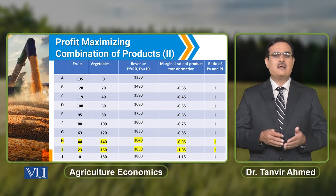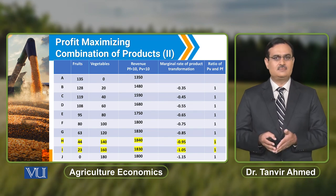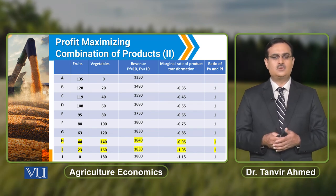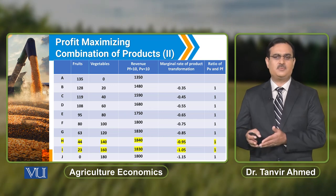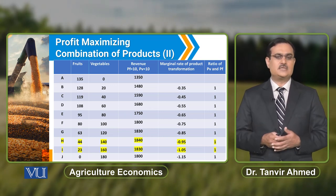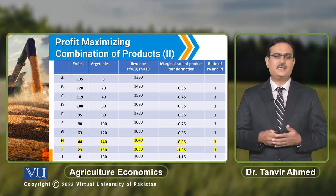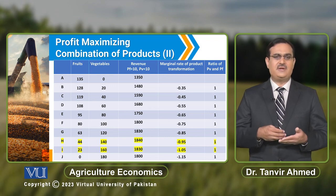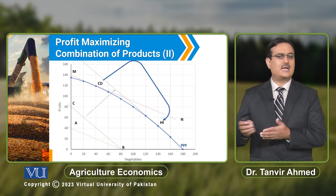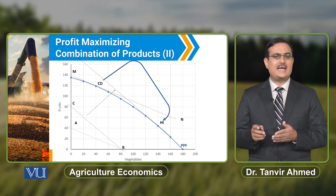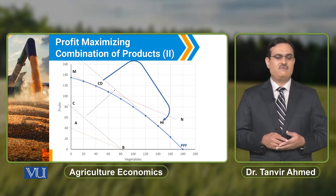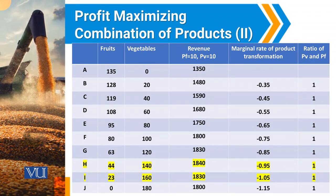Against combination H, the marginal rate of product transformation is less than the price ratio of the two outputs. Against combination I, the marginal rate of product transformation in absolute terms is greater than the price ratio of two outputs. So the profit-maximizing combination is somewhere between these two combinations, which we can show in the diagram by denoting HI. To summarize, the profit-maximizing combination of output can be found by equating the slope of the ISO revenue curve with the slope of the Production Possibility Frontier.